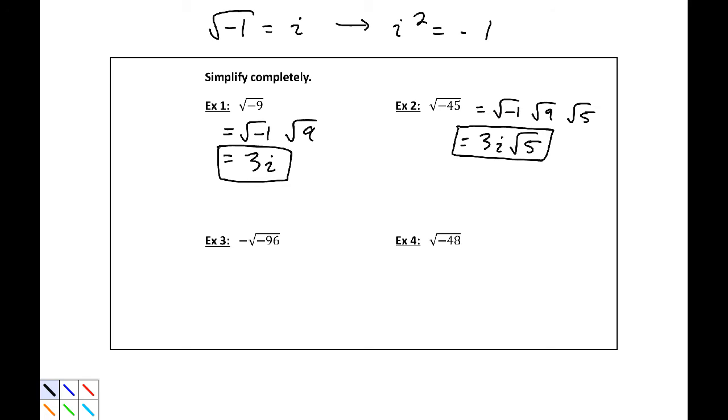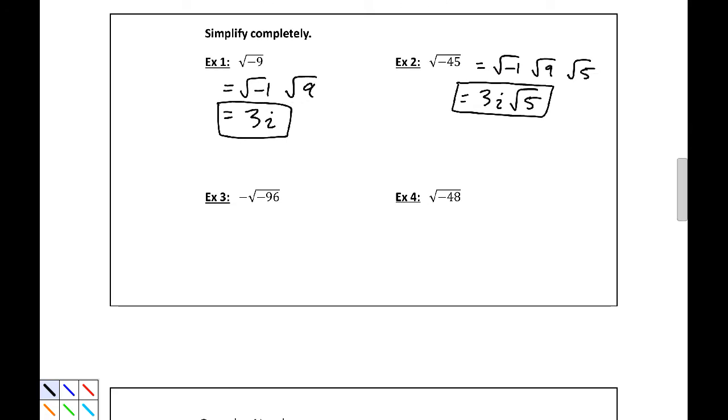For example 3, negative square root of negative 96. The negative on the outside of our radical doesn't actually affect our calculations. The square root of negative 96 - let's see, what goes into 96? 12 does, but that's not a perfect square. 96 divided by 16. Okay, 16 and 6.